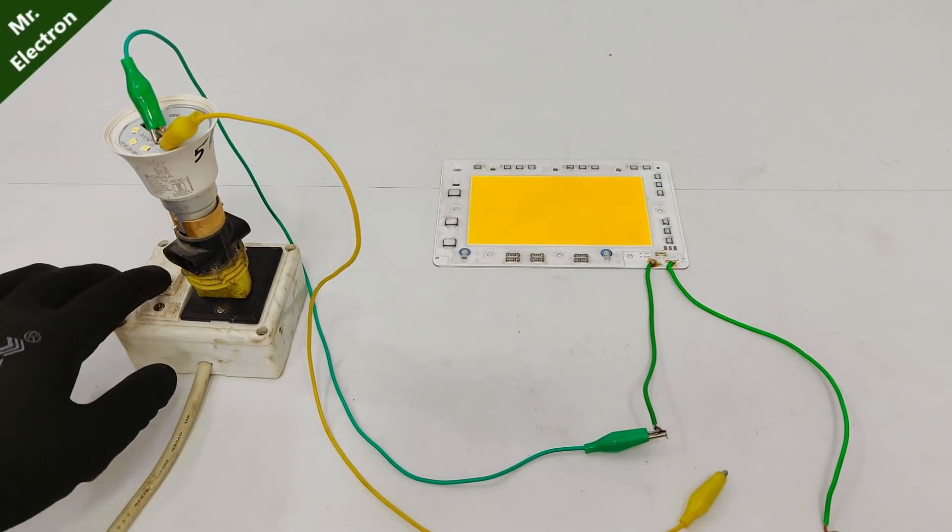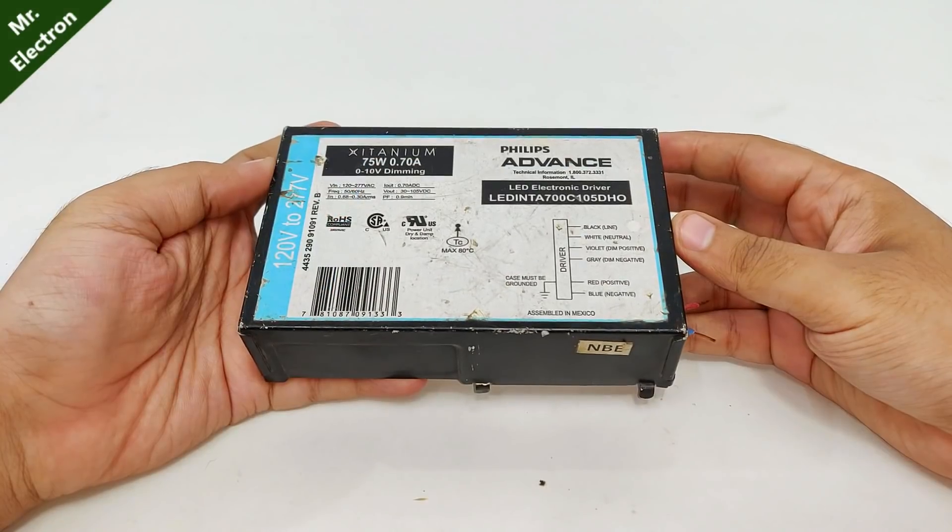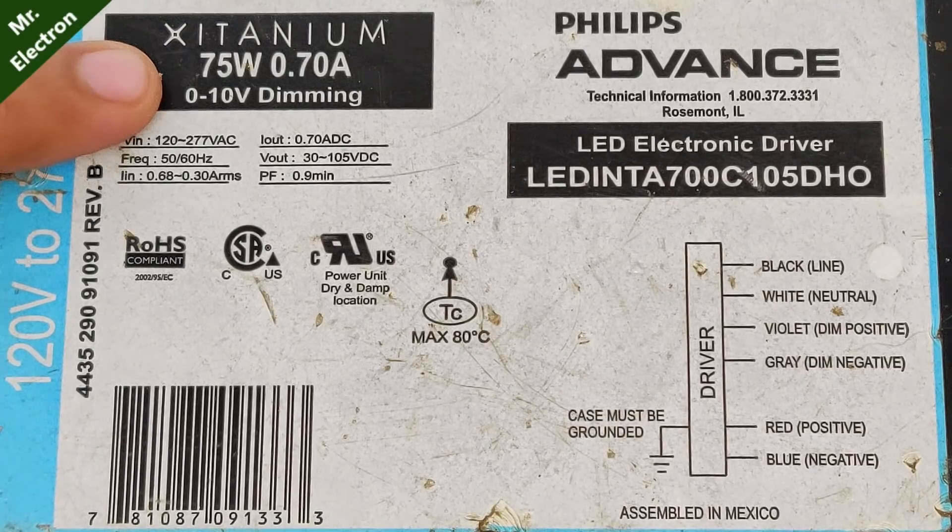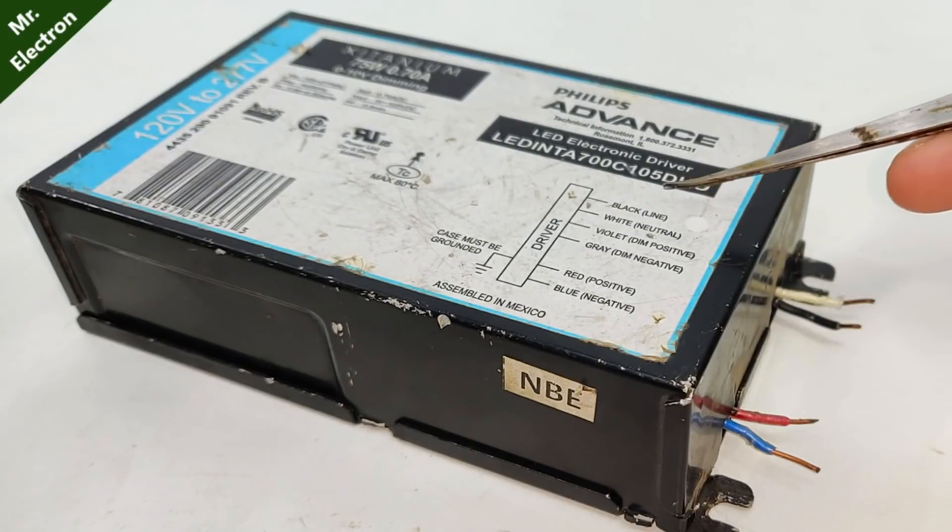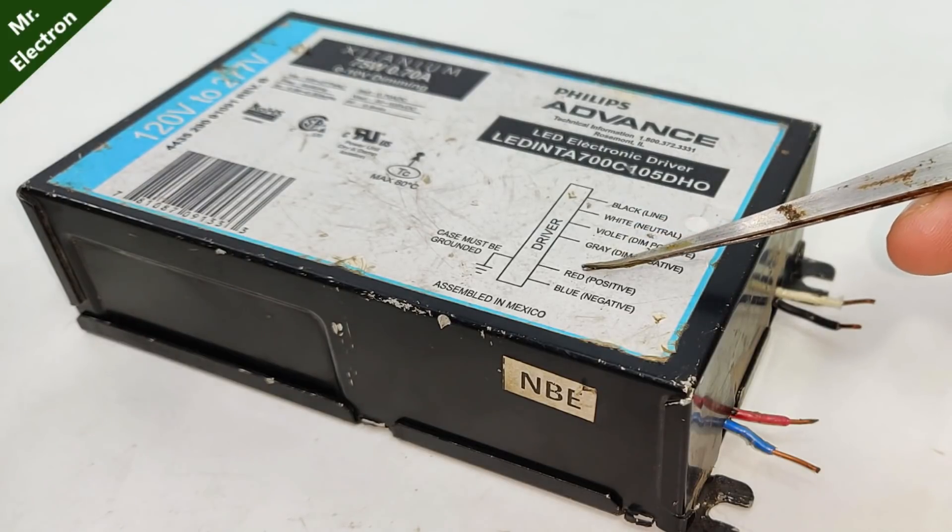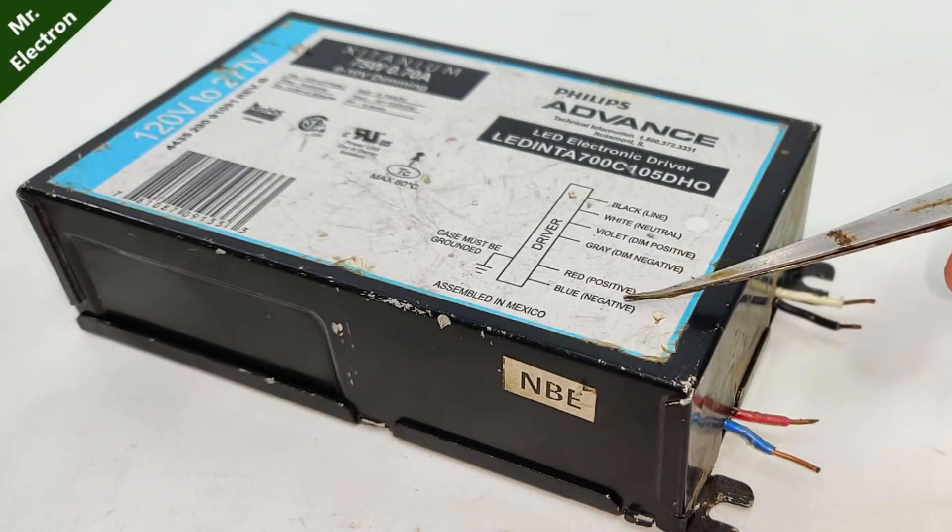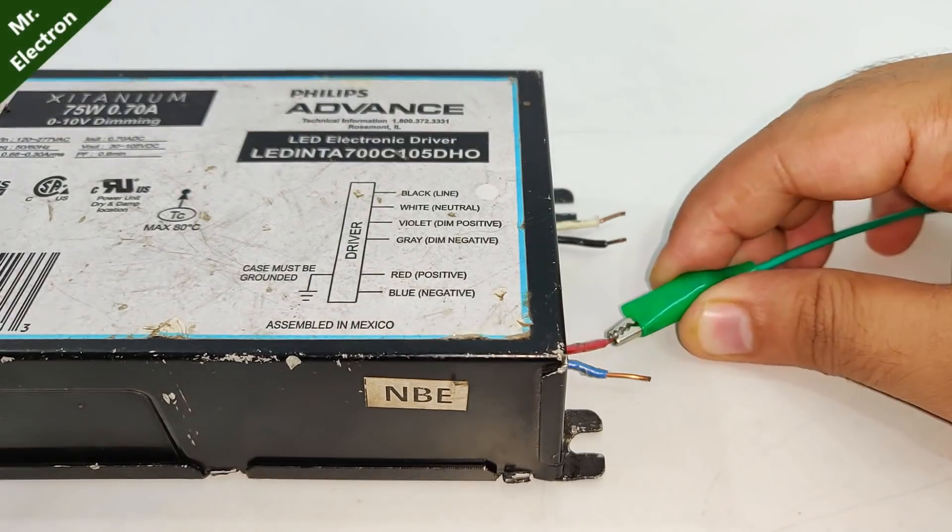Now let's check if we can light up this 100 watts LED panel, and yeah of course not. Now I'm more interested in this giant LED driver, you see, 75 watts. So we have the driver connection diagram: black is line and white is neutral, and red is output DC positive and blue negative.